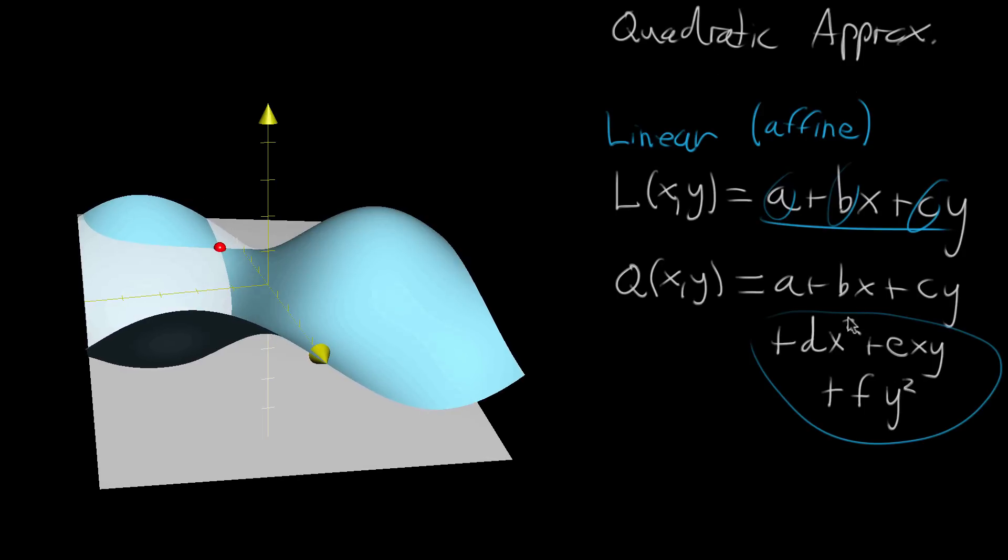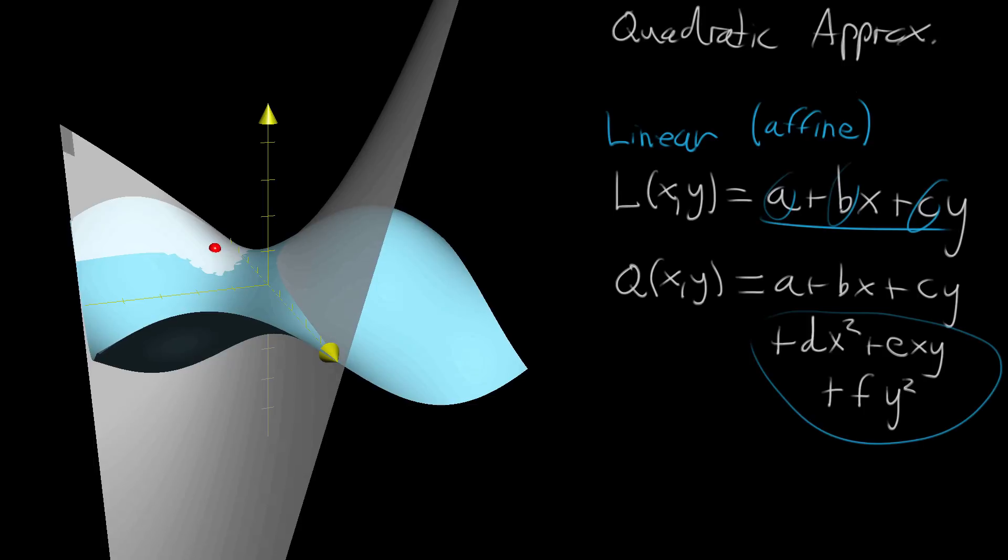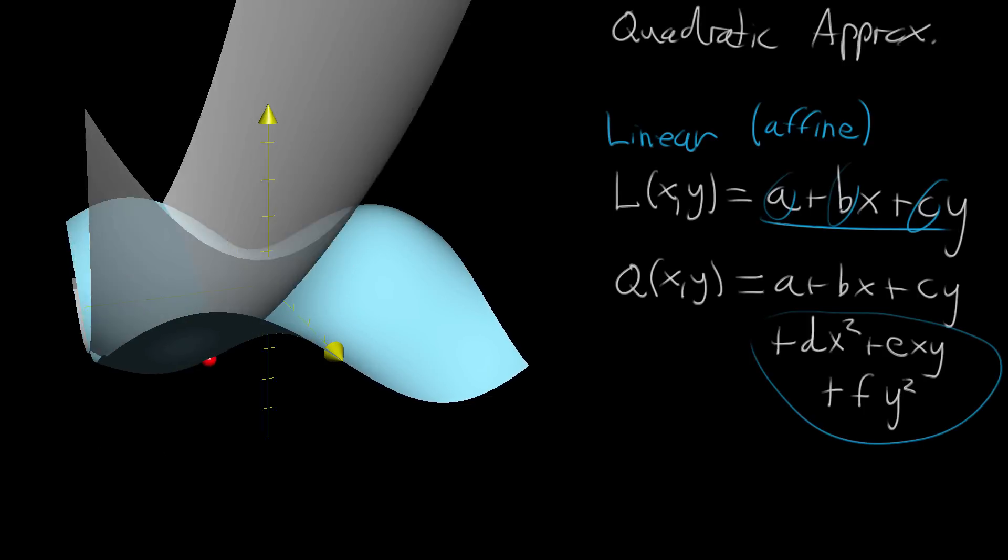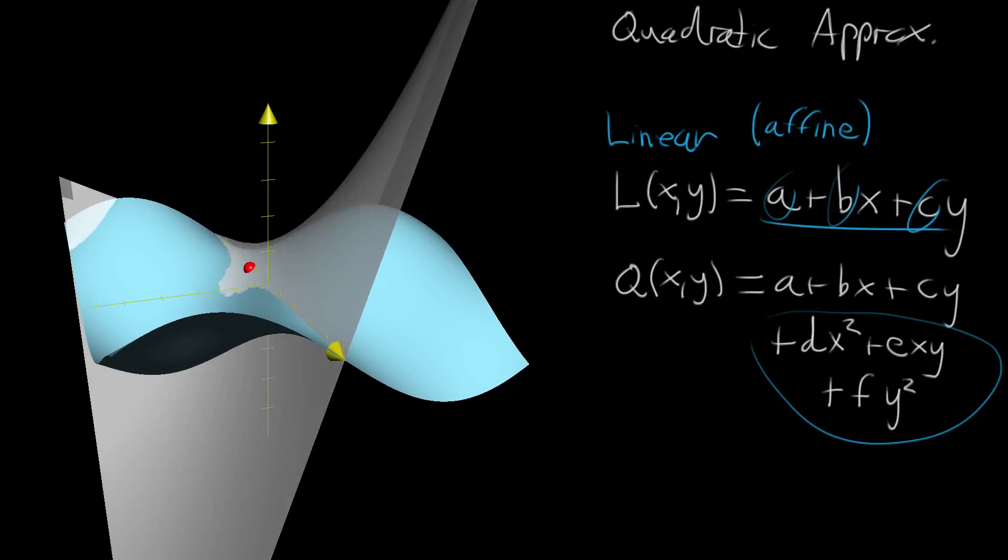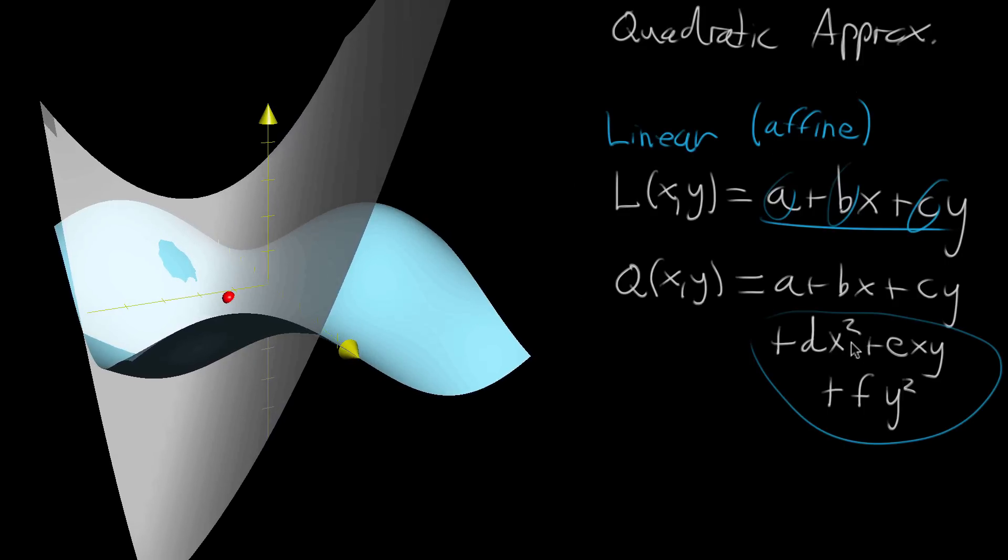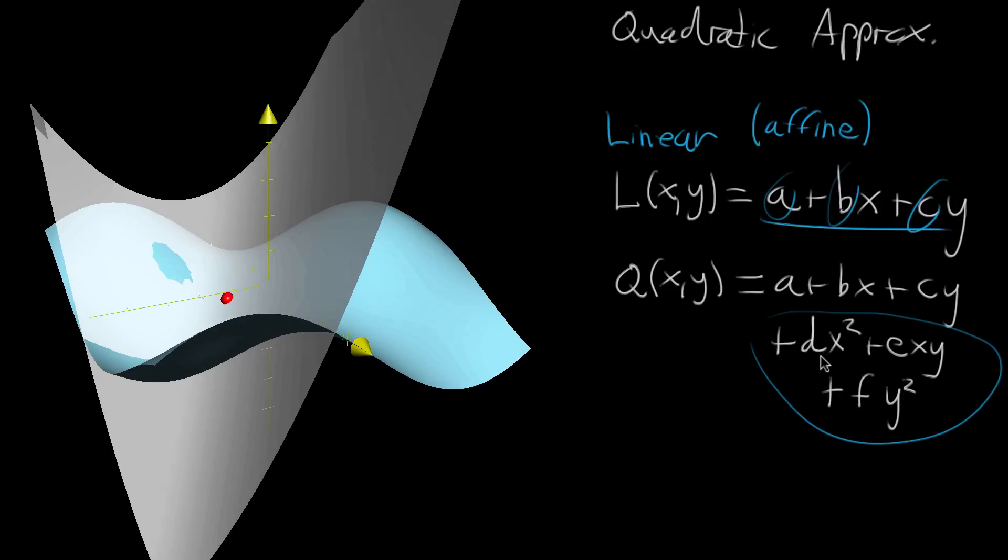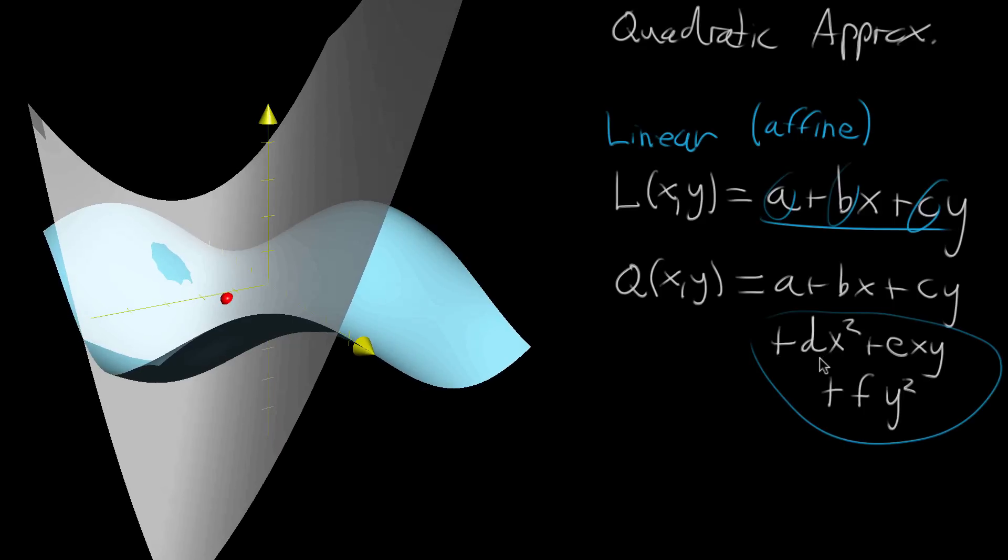So what we're going to do in the next couple videos is talk about how you tweak all of these six different constants so that you can get functions that really closely hug the curve. And they're all gonna depend on the original point, because as you move that point around, what it takes to hug the curve is gonna be different. It's gonna have to do with partial differential information about your original function, the function whose graph this is. And it's gonna look pretty similar to the local linearization case, just added complexity. So we have to add a few more steps in there. And I'll see you next video talking about that.